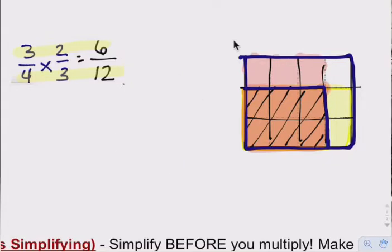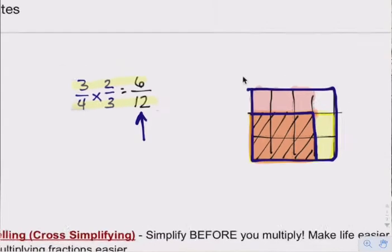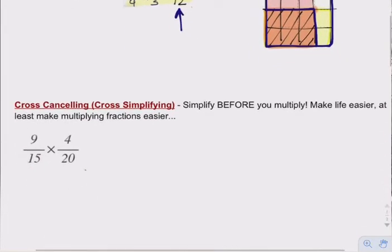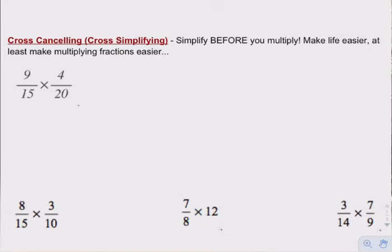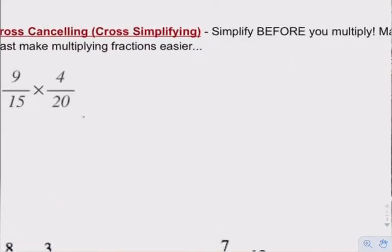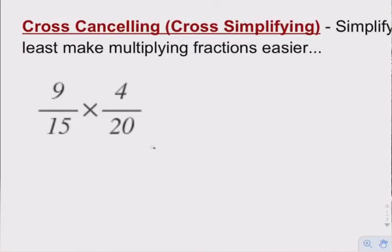So that's the one point I wanted to make on the last video. Now I'm going to move on. One thing we ended up having to do when we were all done is simplify the product — 6/12 — so we divide top and bottom by 6 and get one-half. What we're going to talk about today is what's called cross-cancelling, or cross-simplifying. It's a process where you actually simplify before you even multiply, which makes multiplying fractions easier.